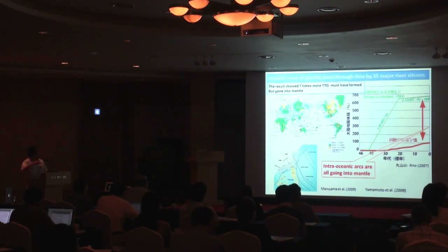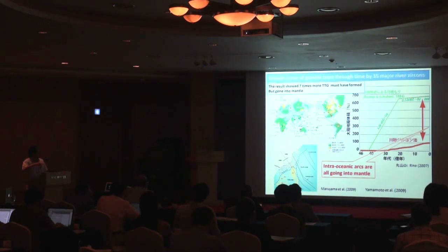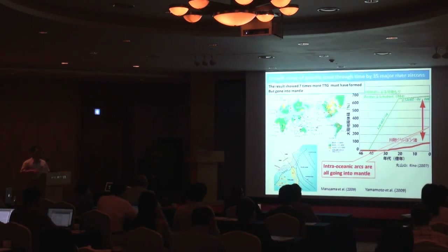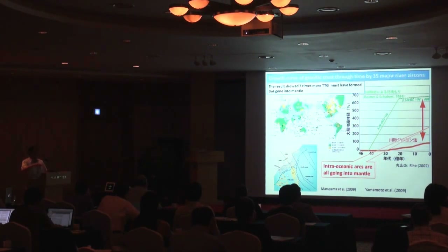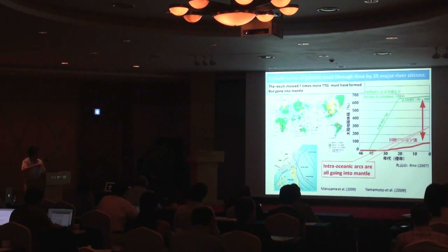The next point is that intra-oceanic arcs are all going into the mantle. Japan is here, Korea is here — six intra-oceanic island arcs, back to 100 million years. All are now being subducted underneath East Asia, with almost nearly 0.001% remaining in the case of frontal collision. This has long been known, but nobody pointed out why.